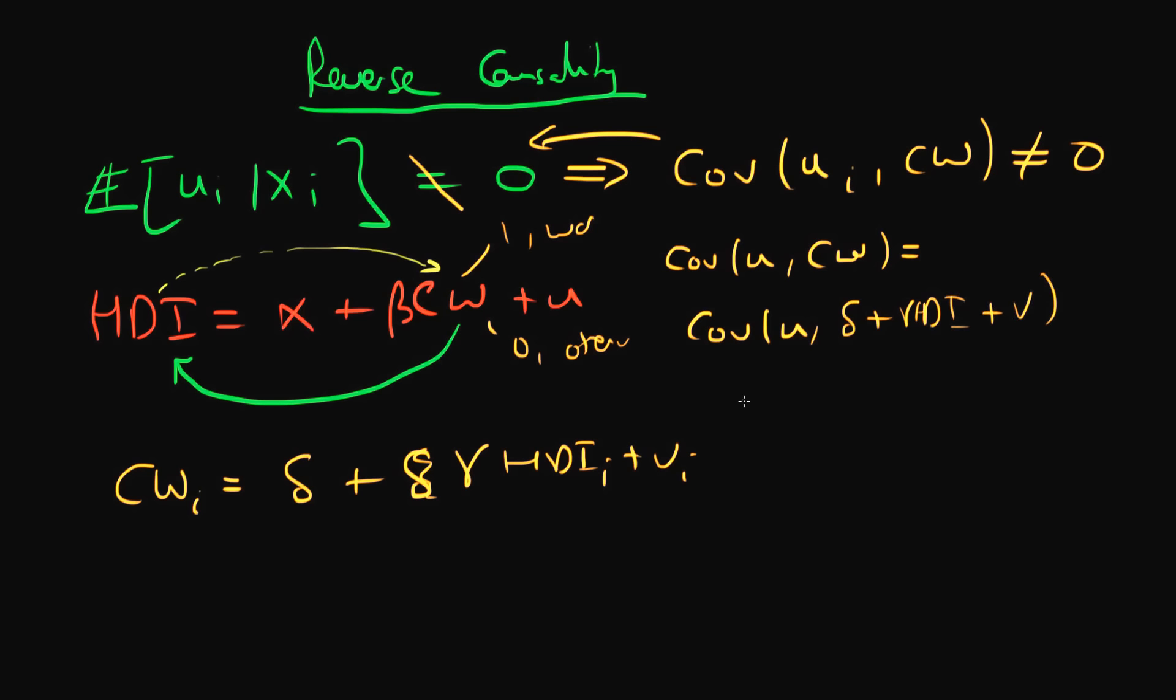This is the same as gamma times the covariance of U with the HDI index because I'm assuming that the covariance of U with the constant is going to be zero. That's always going to be the case and I'm also assuming that the errors in these two models are orthogonal. In other words, the covariance between the errors is also zero, which is a reasonable assumption.